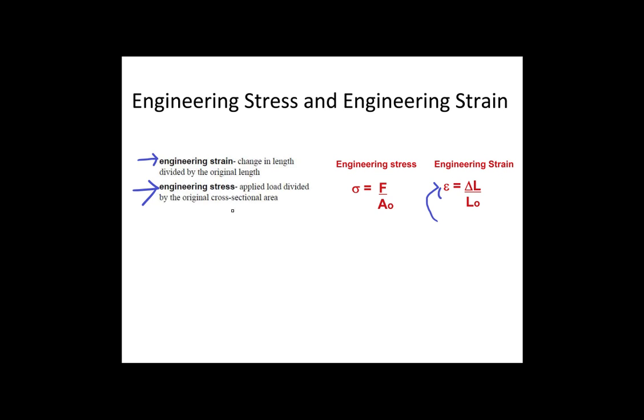Engineering stress is defined as the applied load divided by the original cross-sectional area. It is showed mathematically over here and is symbolized by a lowercase sigma.